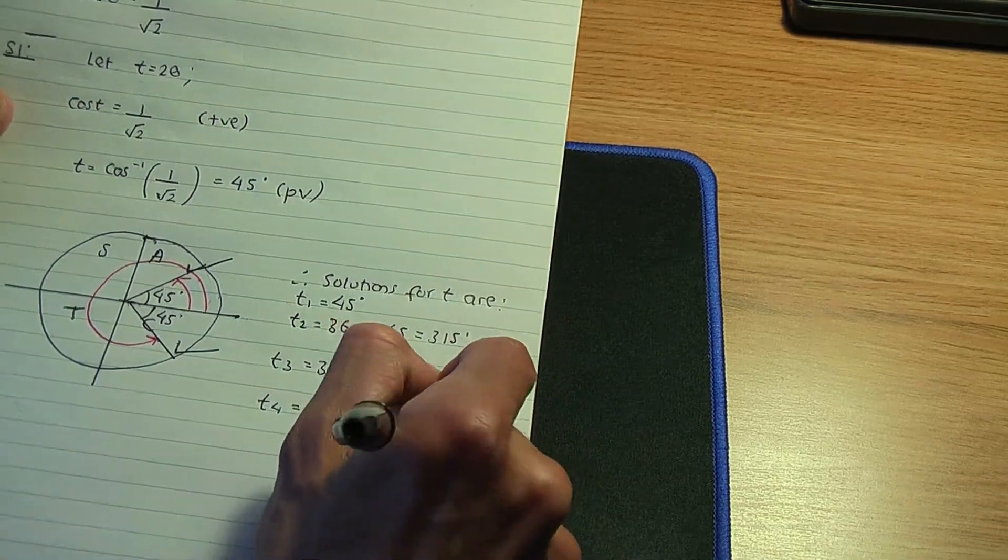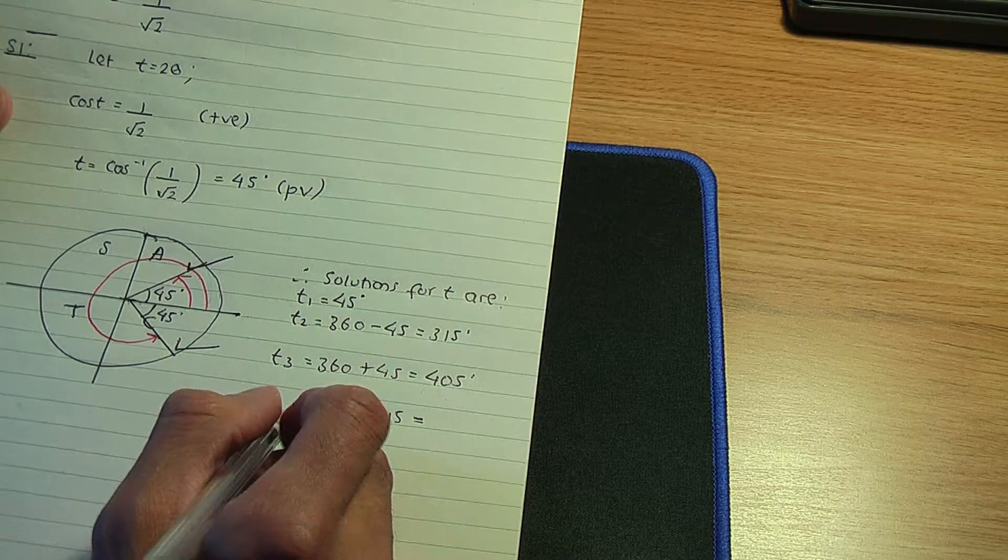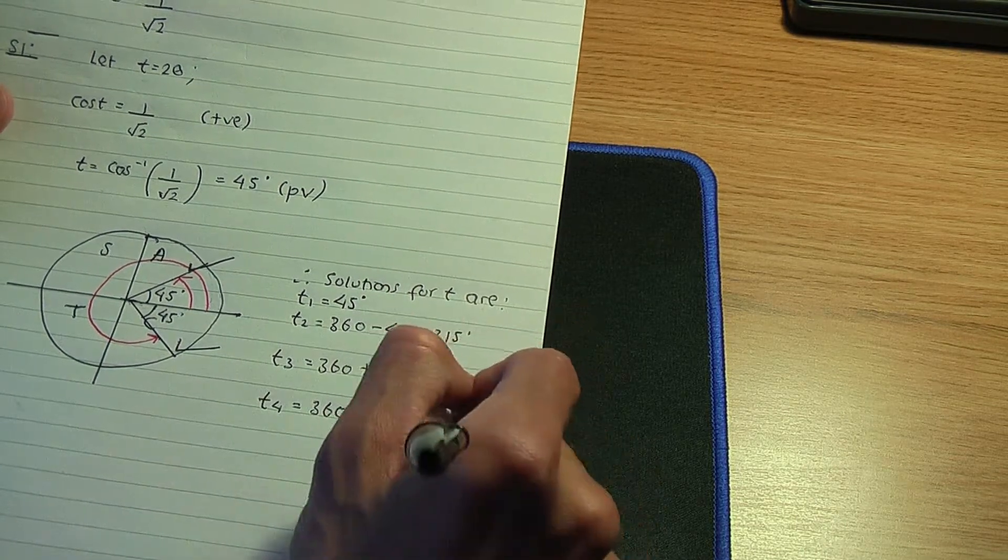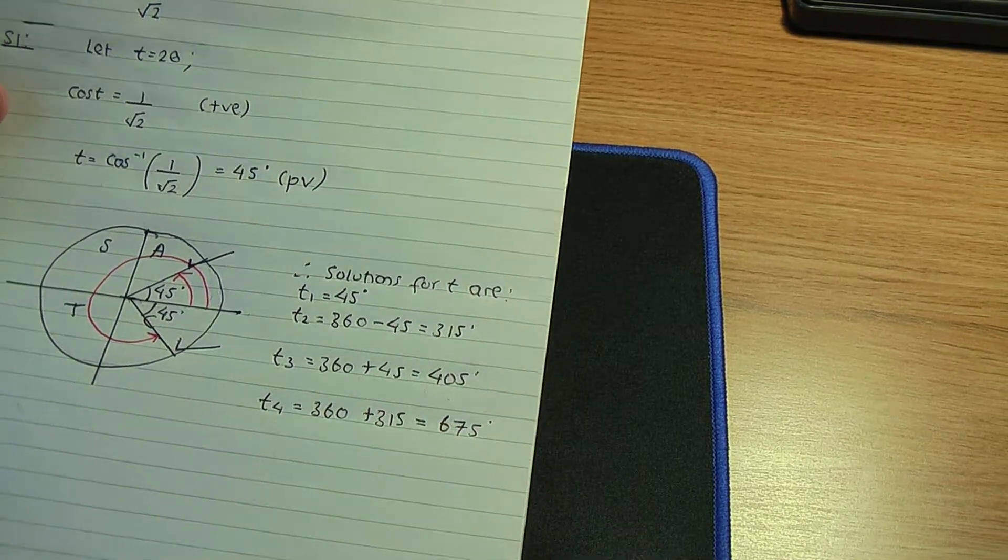So I think another one, just to be on the safe side. So t4 will be 360, so that is one revolution,